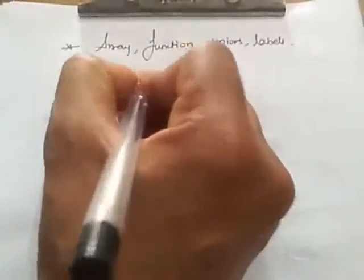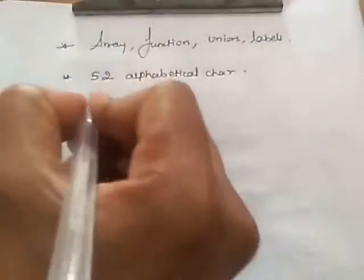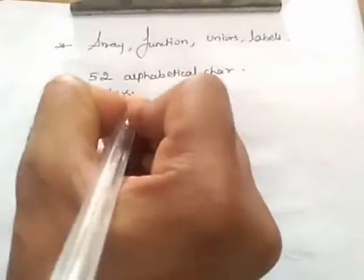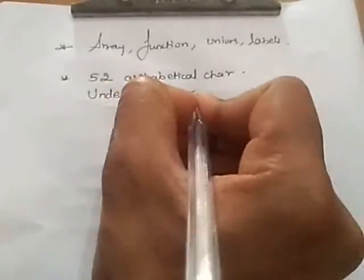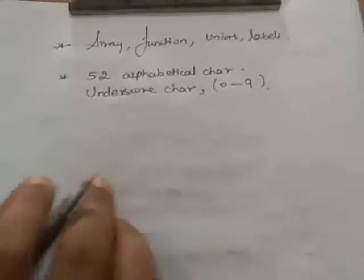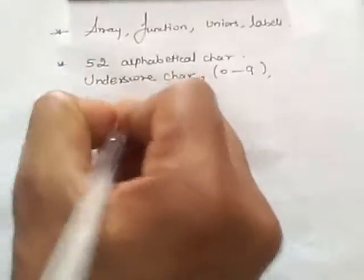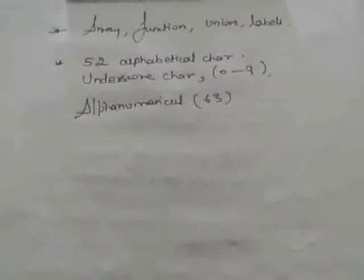There are 52 alphabetical characters in C language, uppercase and lowercase. We have underscore characters, we have numerical digits 0 to 9. So, there is a total 63 alphanumerical characters that are used to represent the identifier.